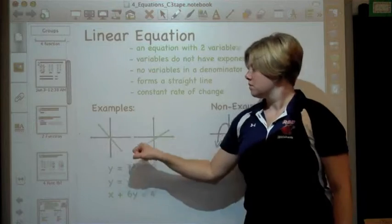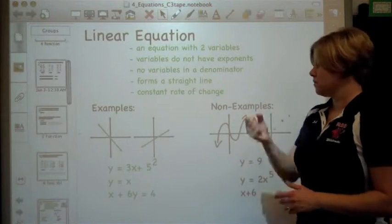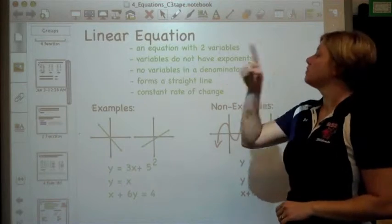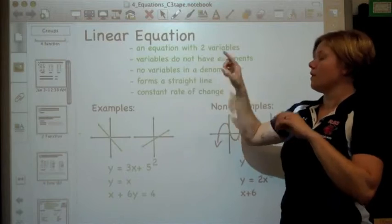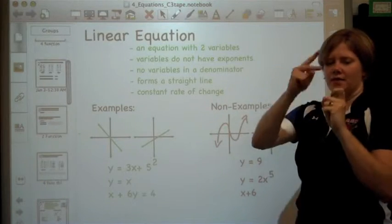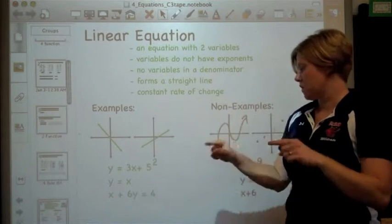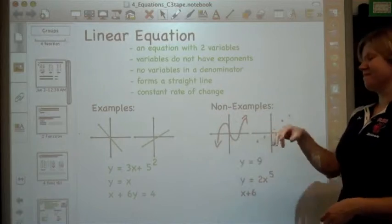So here's some examples. There's a line here and a line here. And this has 5 squared, but 5 squared is 25. So right here where it says no variable with an exponent, this has two variables right here. Those are all linear.